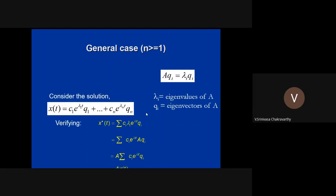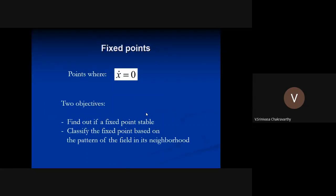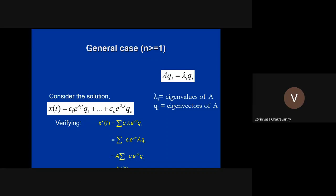To verify this solution satisfies the equation, plug it in: the λ_i come out, and since λ_i·q_i = A·q_i, you can factor out A. The result is Σ c_i·e^(λi·t)·A·q_i, which equals A·x(t). So x-dot = A·x(t), confirming the expression satisfies the original equation.